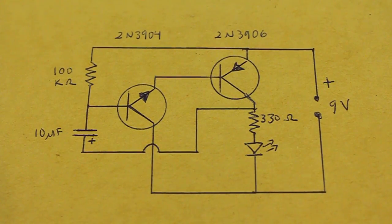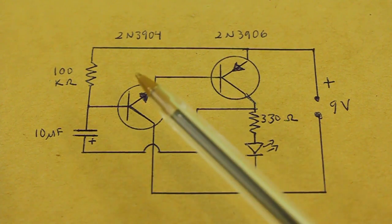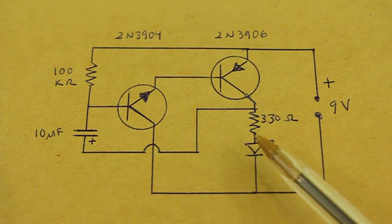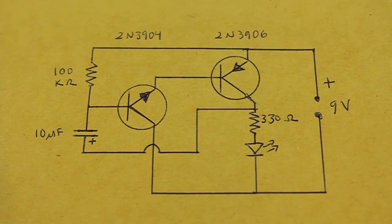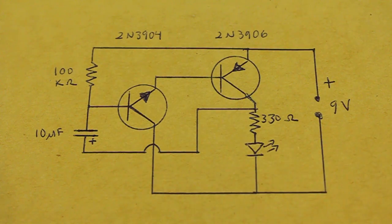Here we have the schematic, very simple as you can see. We have the two transistors, the NPN and the PNP. Here is the LED lamp with its resistor. And the frequency of oscillation is controlled by this capacitor and this resistor.